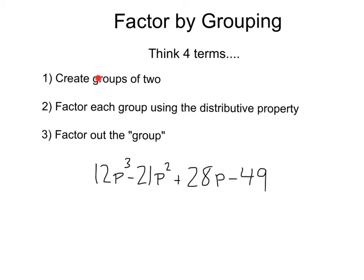First, create groups of two. Second, factor each group using the distributive property. And third, factor out the main quote-unquote group.